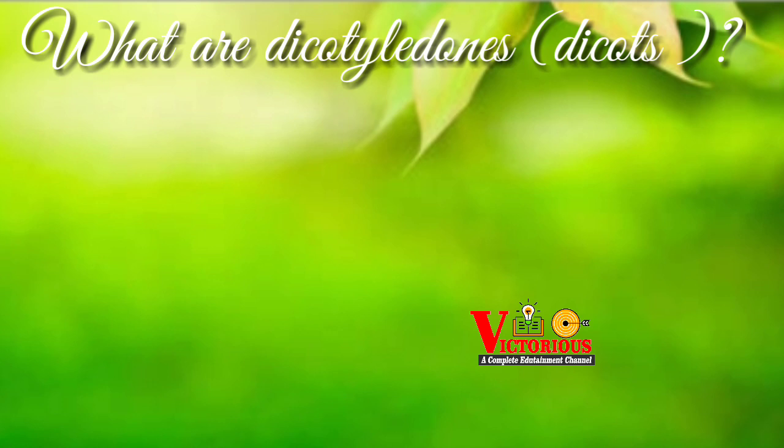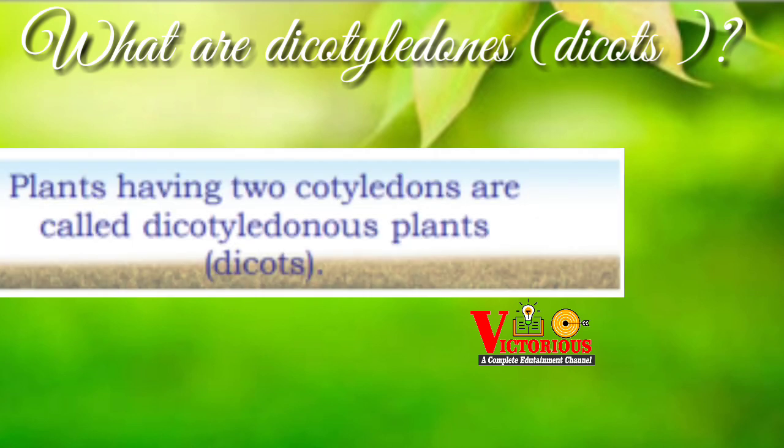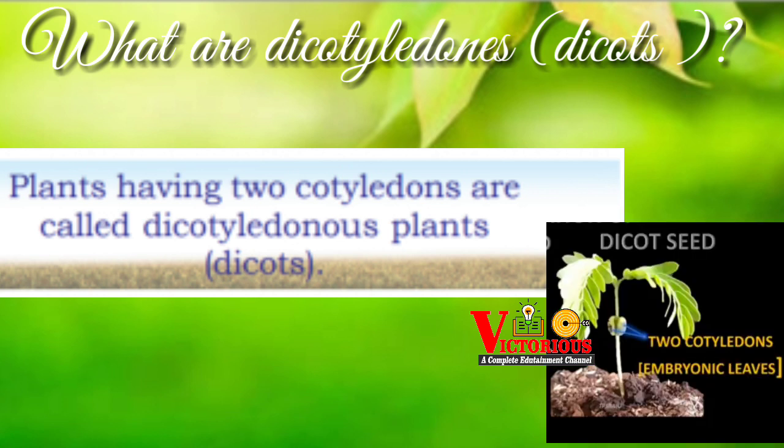Then, what are dicotyledons or dicots? Plants having two cotyledons are called dicotyledon plants, or dicots.